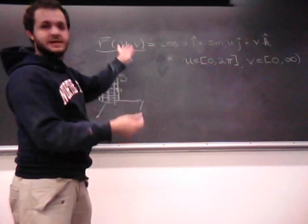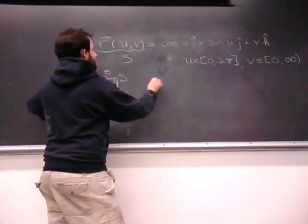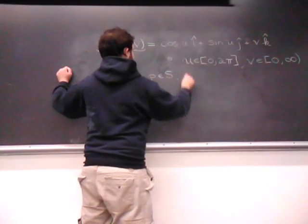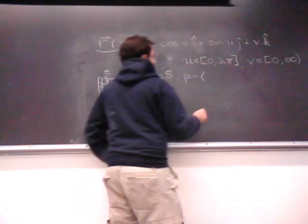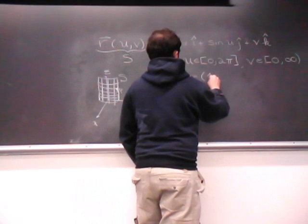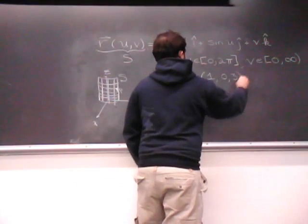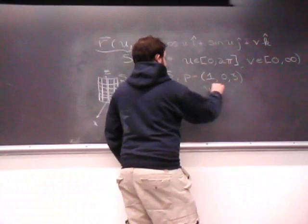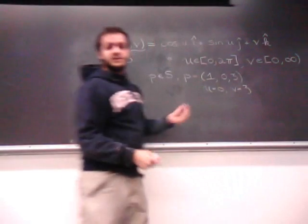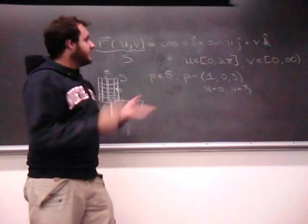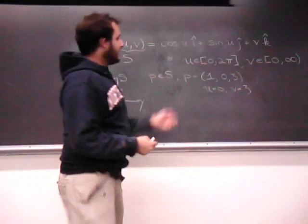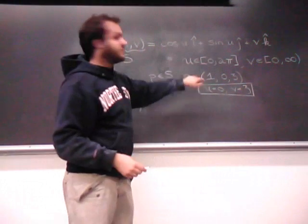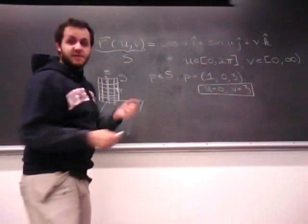So, if we take a point P, let's take any point. Let's take the point (1, 0, 3). We want to figure out when this happens, first of all. This will happen when u equals 0 and v equals 3. Because when u equals 0, the cosine of 0 is 1, the sine of 0 is 0, and 3 equals 3. So, the point P is touched when u equals 0 and v equals 3.